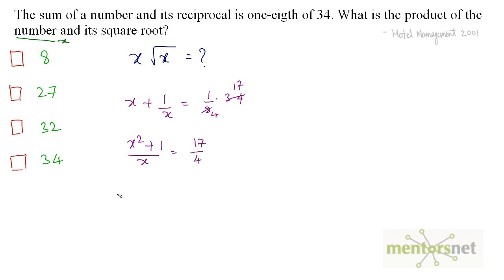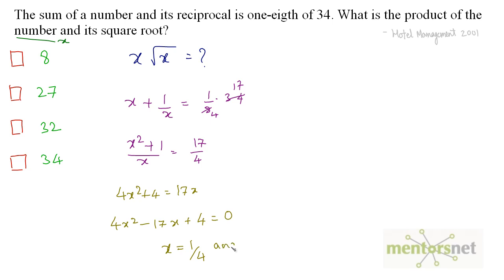We can write this as 4x squared plus 4 is equal to 17x. Moving this 4 to the left and x to the right: 4x squared minus 17x plus 4 is equal to 0. If you solve this quadratic equation using the formula, you get x as 1 by 4 and x as 4. Remember that the quadratic equation has got two roots.